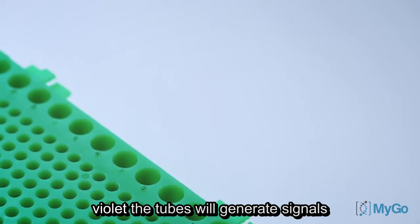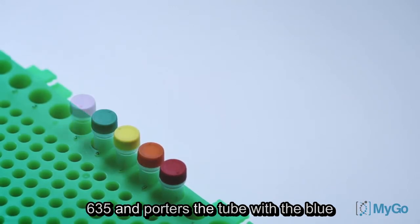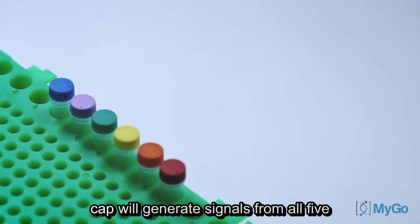The DNA tubes will generate signals from different fluorescent reporters that the MIGO Pro will discriminate between. From red to violet, the tubes will generate signals from FAM, CAL540, CAL560, CAL610 or CAL635 reporters. The tube with the blue cap will generate signals from all five reporters.